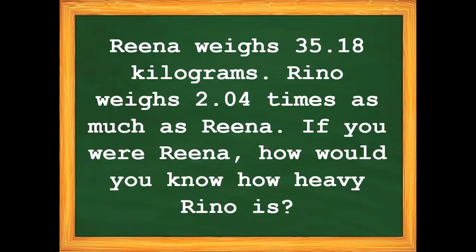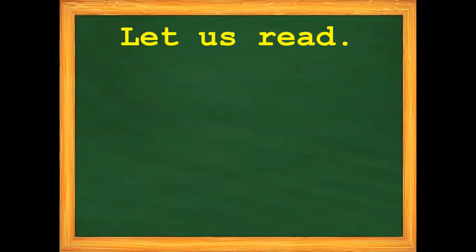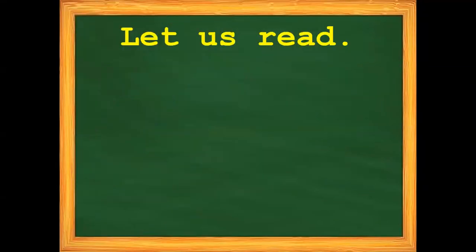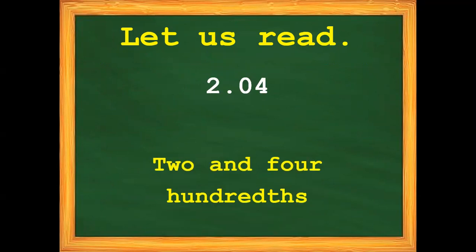First, let us read the given decimal numbers. How do we read this decimal number? Very good! It is 35 and 18 hundredths. Another — very good! It is 2 and 4 hundredths.